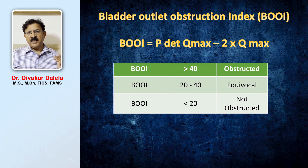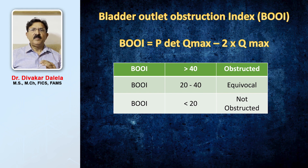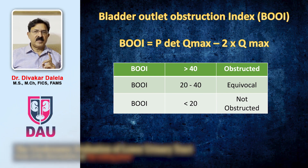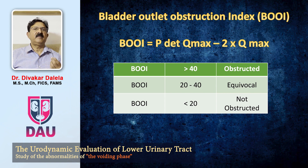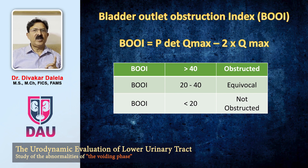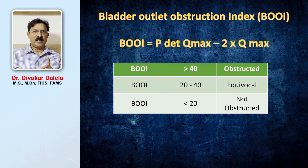Now, this is the observation by looking at the graphs. But today we believe in more objective indices to measure bladder outflow obstruction. One commonly used index is the Bladder Outlet Obstruction Index, known as BOOI. This is calculated as P-det at Q-maximum minus twice Q-max. If the BOOI is more than 40, the patient is obstructed. If it is 20 to 40, it is equivocal. And if it is less than 20, it is not obstructed.